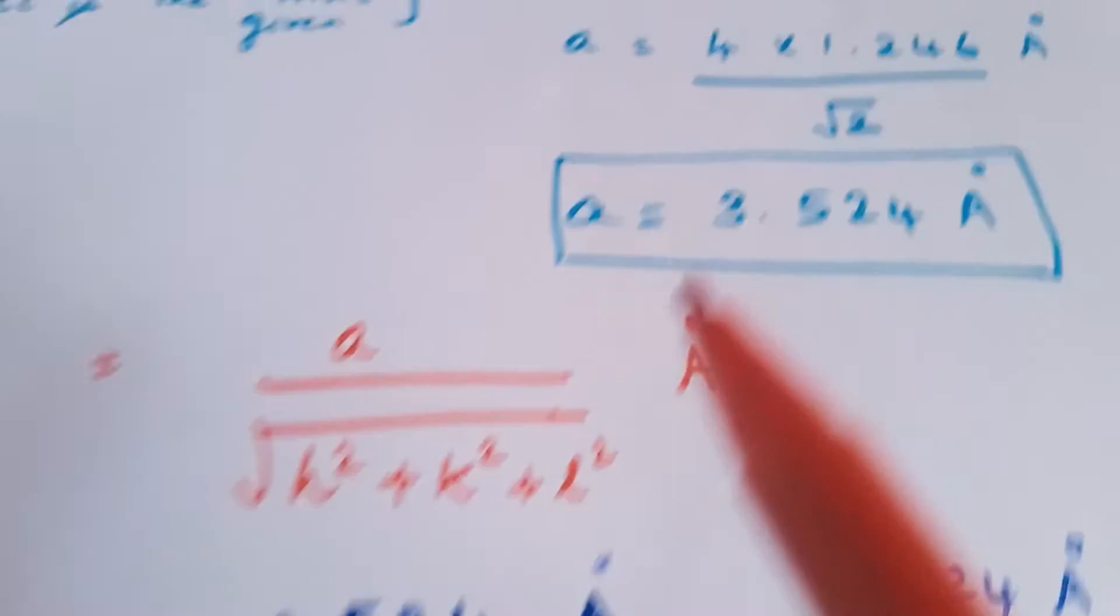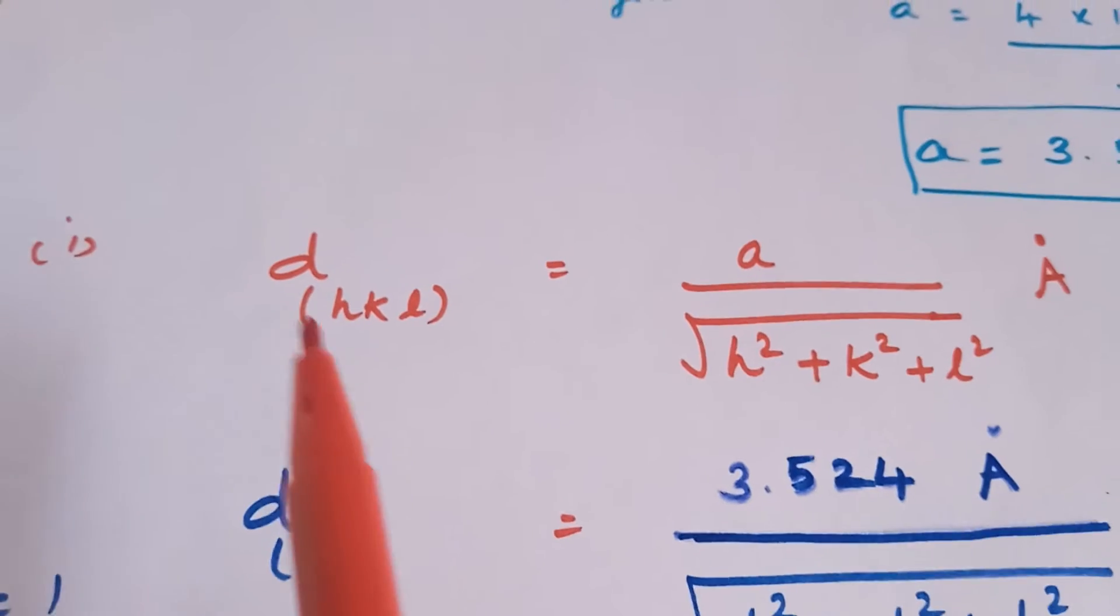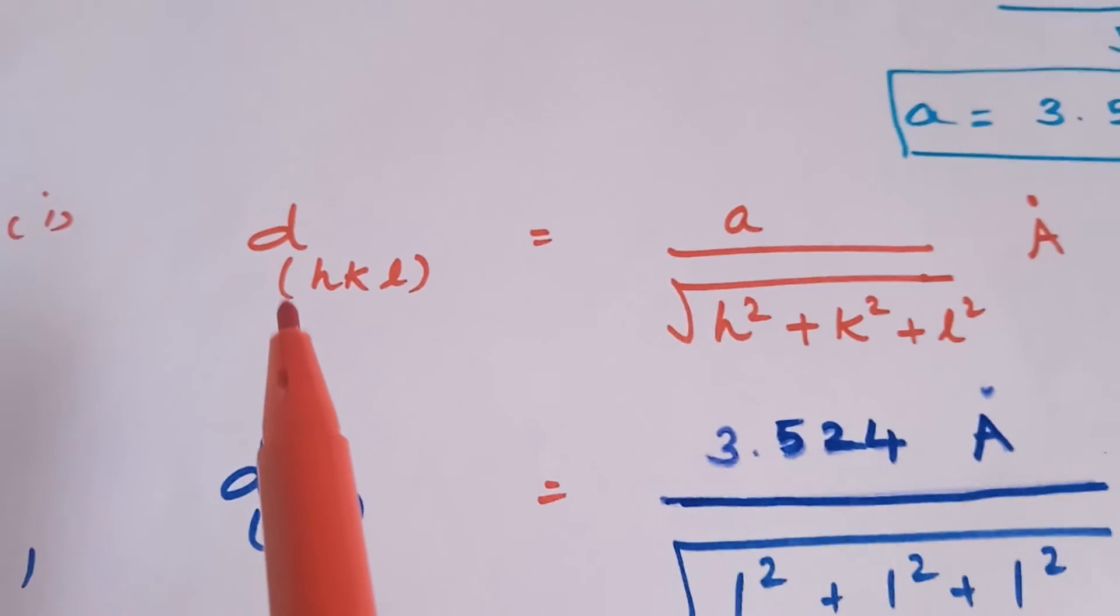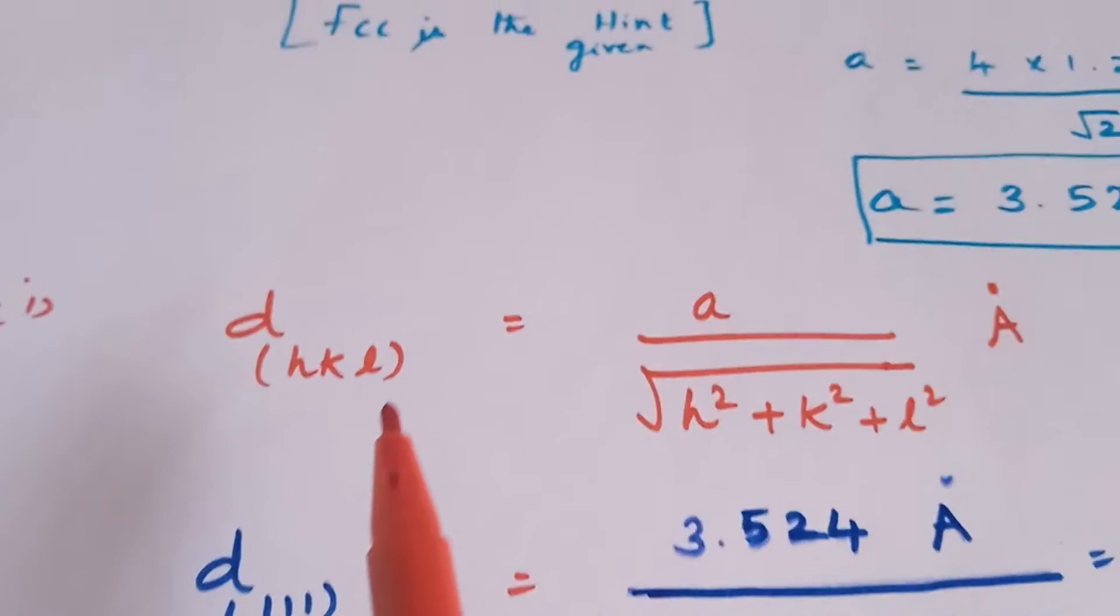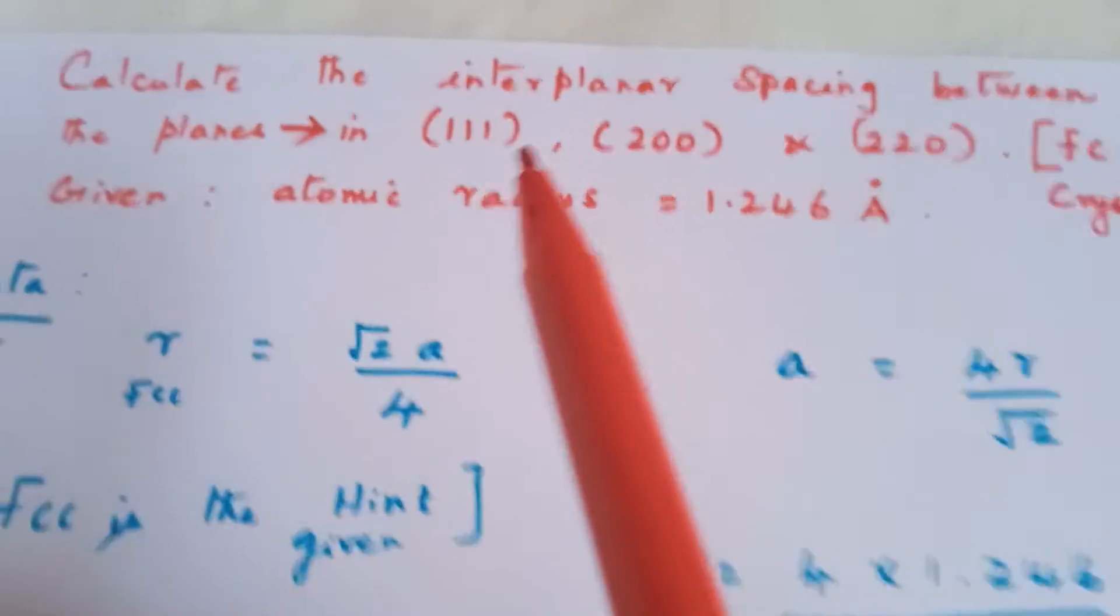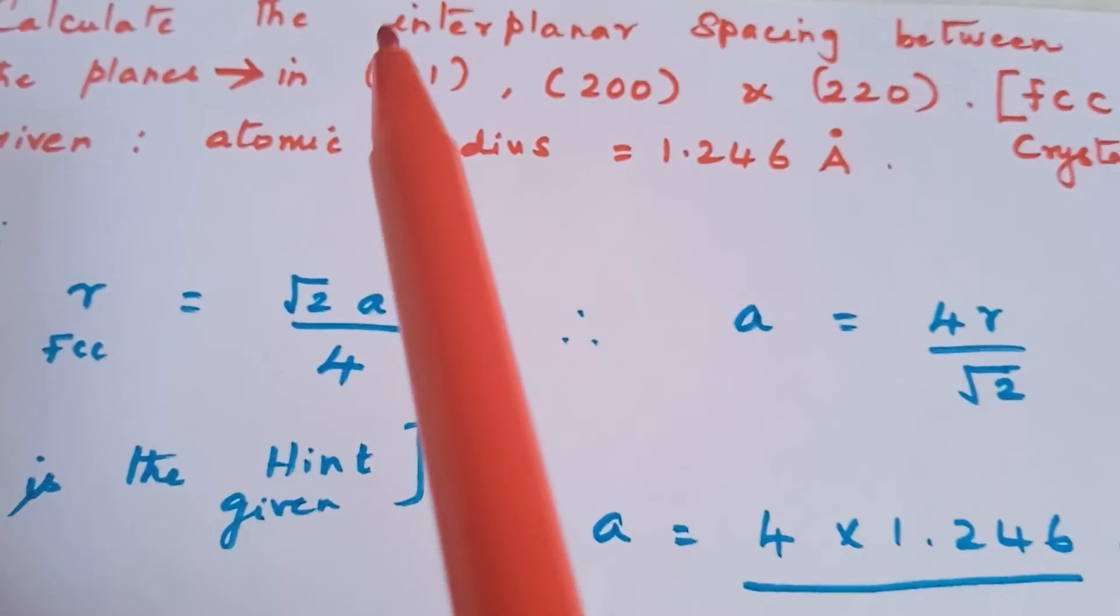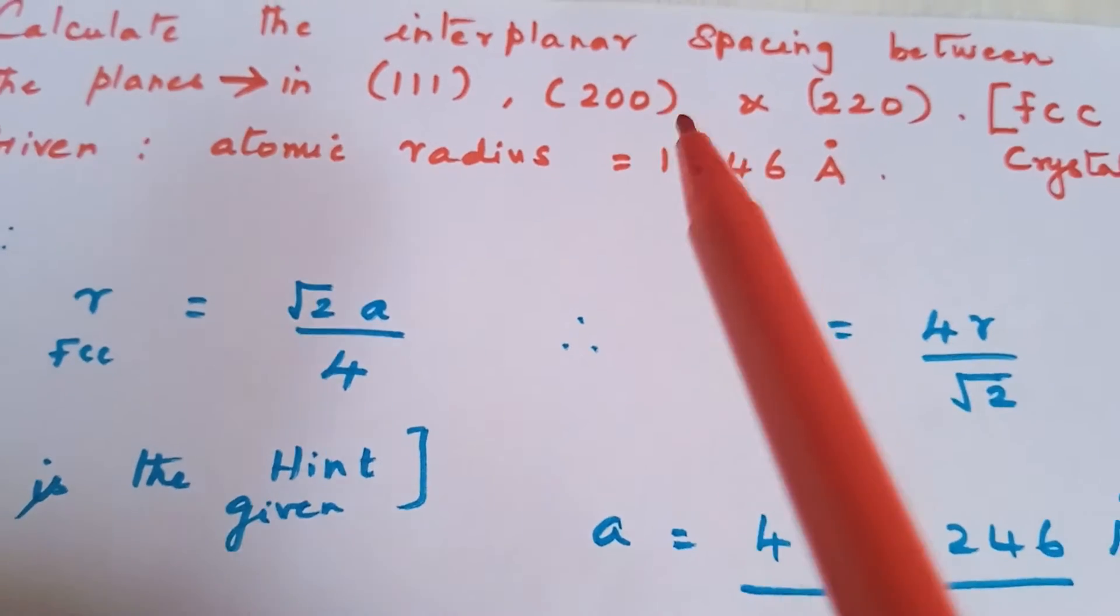This a is substituted to solve for interplanar spacing or d spacing for the Miller indices hkl. Miller indices represents the planes 111, 200, 220.